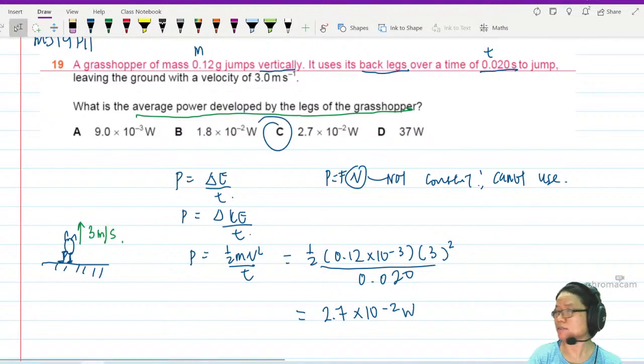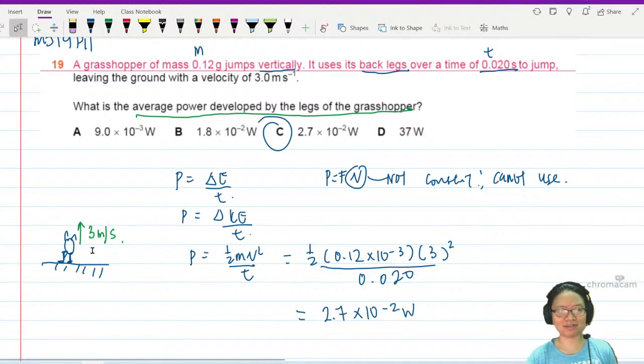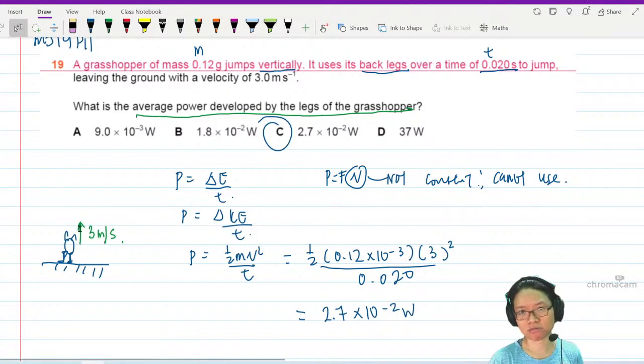So always when you look for power you have two routes. Only use this when you know that the velocity is constant. I know for a fact, because I jump enough in this life, that if I leave the ground at a certain speed there's zero chance that I can maintain that speed because there's gravity pulling me down.